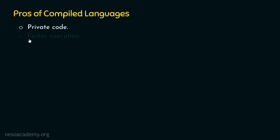The second advantage is faster execution. We just need to compile our code once and we can run the executable multiple times. The executable is written in machine code, which means it is obviously faster. Hence, the execution is always faster.